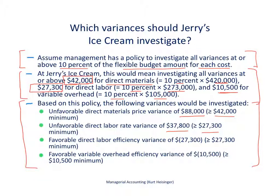Third, we had a favorable direct labor efficiency variance of $27,300, which is right at our criteria threshold, so we'll investigate why our workforce was more efficient than anticipated — perhaps a training program worked well. Fourth, we had a variable overhead efficiency variance of $10,500, which is right at the minimum threshold of $10,500, so we'll investigate that as well.